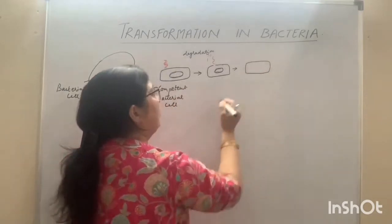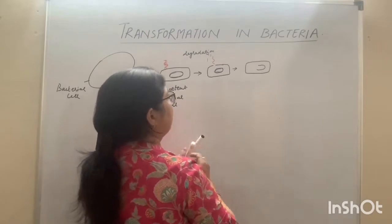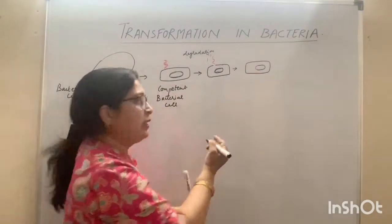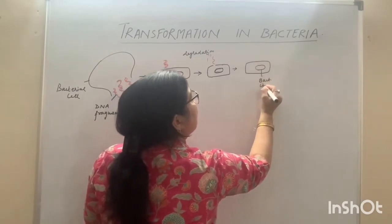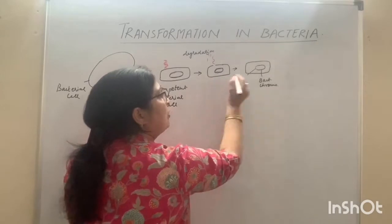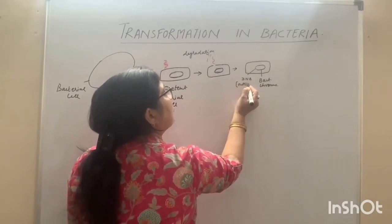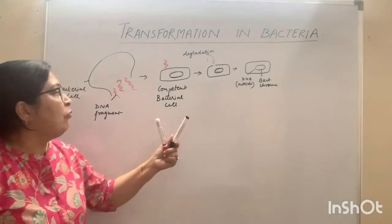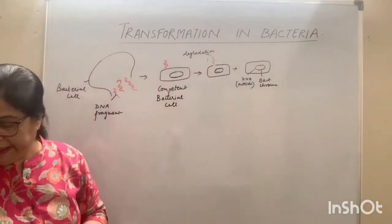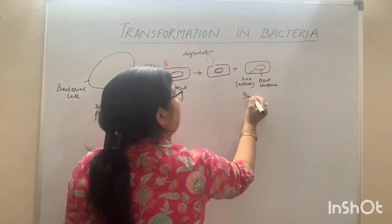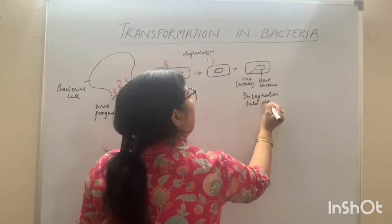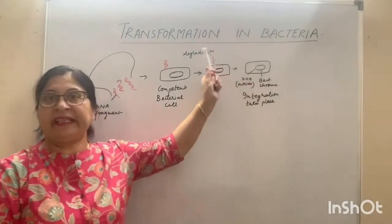When this single strand enters, it integrates with the bacterial chromosome. The DNA material comes from outside — this is the bacterial chromosome — and the DNA from outside, or from the donor cell, integrates here. Single strand DNA enters and incorporation takes place — it combines with the bacterial chromosome.